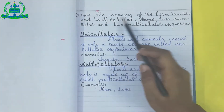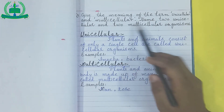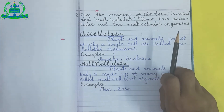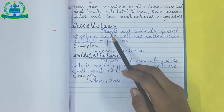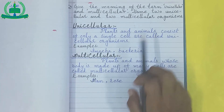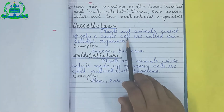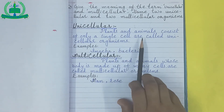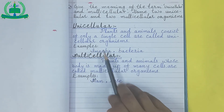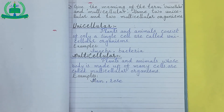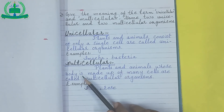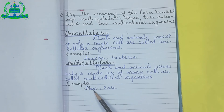Write question number 4: Explain the meaning of the terms unicellular and multicellular, and name two unicellular and two multicellular organisms. Unicellular: Plants and animals that consist of only a single cell are called unicellular organisms. Examples: Amoeba and bacteria. Then write the heading 'Multicellular': Plants and animals whose body is made up of many cells are called multicellular organisms. Examples: Man and rose.